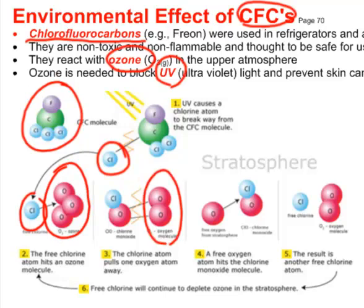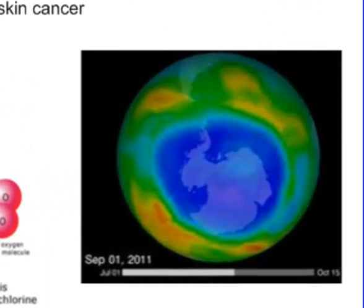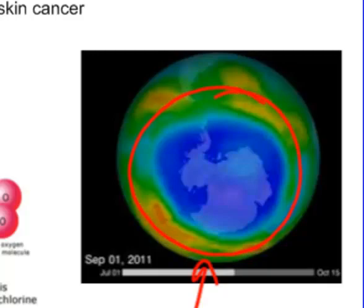Now, ordinary oxygen doesn't block UV — O3, ozone, is what blocks UV. A molecule of chlorine oxide forms, and in no time that chlorine gets regenerated to go attack another ozone molecule. Here's a photograph taken from space showing the South Pole, where we've got quite an ozone hole where the ozone has been significantly depleted.